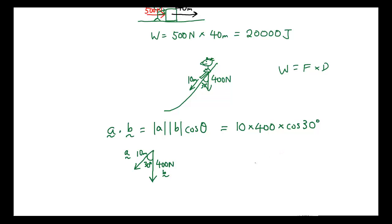So now you can imagine we have our 10 meters as vector a and then we have directly downwards 400 newtons as vector b and the angle between them is 30. So we're doing 10 meters times 400 times cos 30. Why does that work? Because if you have a look at our triangle, we have 10 meters going down this way and 400 going down this way.